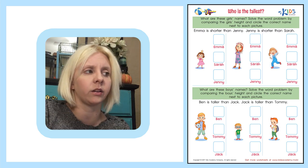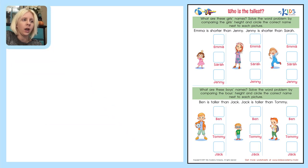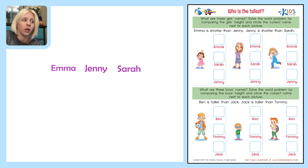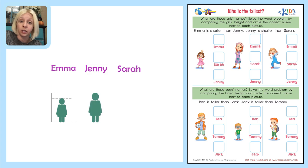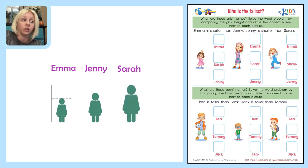I'm going to write out the information I know. I have Emma, Jenny, and Sarah. Emma is shorter than Jenny, so Jenny is a little bit taller. Then it says Jenny is shorter than Sarah. So the tallest one is going to be Sarah — I'll write T for tallest. We know that Emma is going to be the shortest — I'll write SH for shortest. And Jenny is going to be the one in the middle.